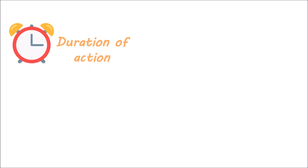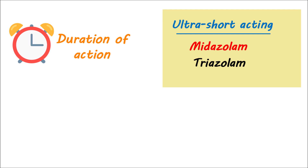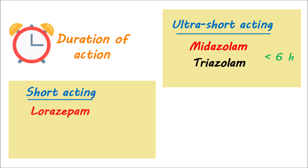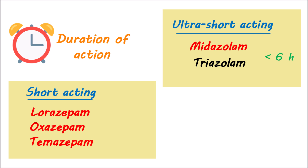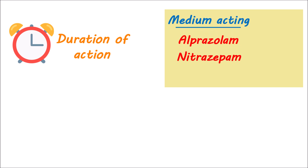Benzodiazepines can be classified based on the duration of action. Ultra-short-acting benzodiazepines mainly include midazolam and triazolam, with a duration of action of less than 6 hours. Short-acting drugs include lorazepam, oxazepam, and temazepam, with a duration of action of 12 to 24 hours. These drugs are easily remembered because their first letters spell LOT. Medium-acting drugs include alprazolam and nitrazepam, with a duration of action of approximately 24 hours.